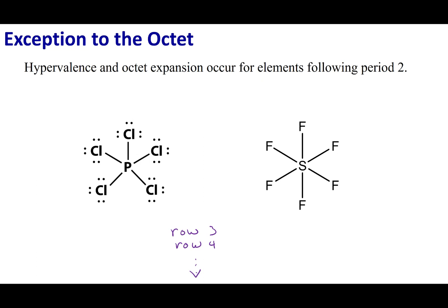For example, PCl5—you'll notice that phosphorus has 10 electrons around it. SF6 is going to have 12 electrons around it. These are real compounds that we observe experimentally.